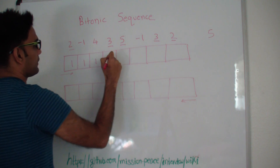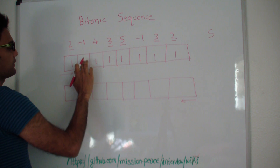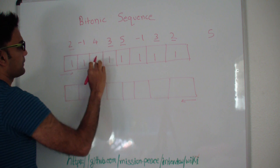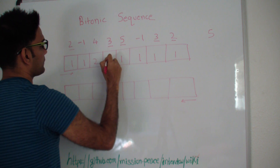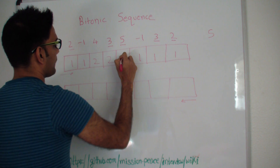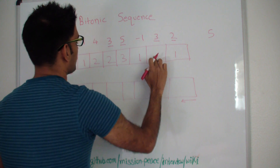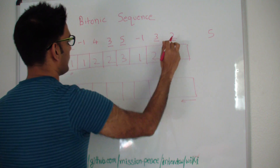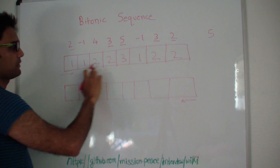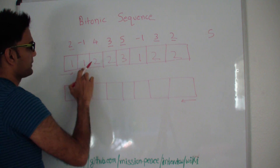Let me quickly fill up this table with the longest increasing subsequence going from left to right. This is not greater than this so this stays 1. This is less than this so this becomes 2. This is same — 2, 3. This is less than 3 so this becomes 2. This is less, so this becomes 3. This stays 1, this one becomes 2. This is again 2. So this is the longest increasing subsequence at any point going from this side.